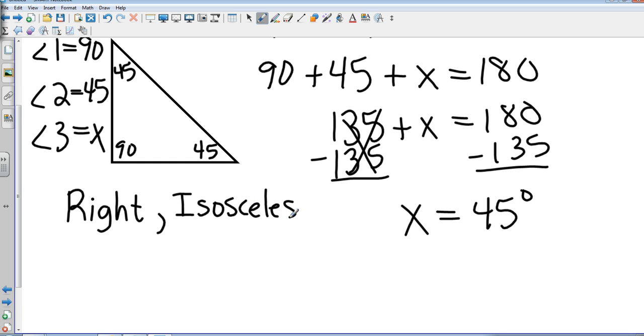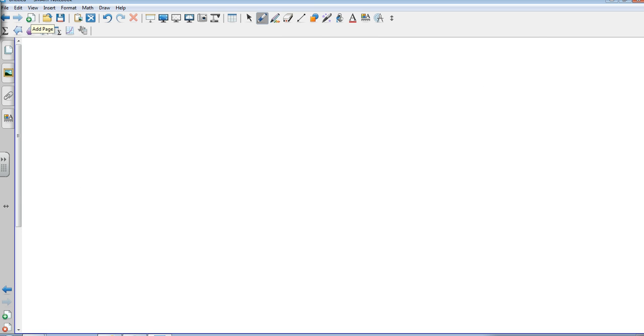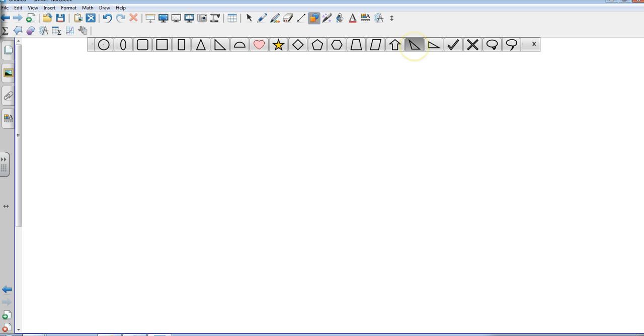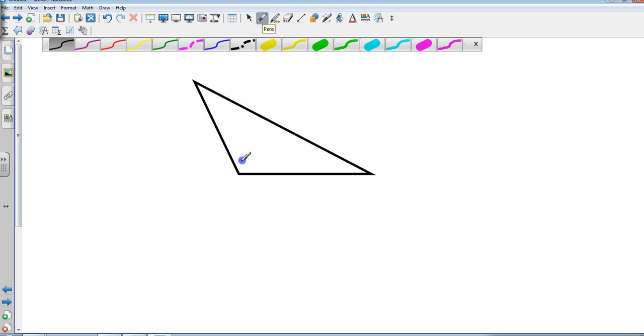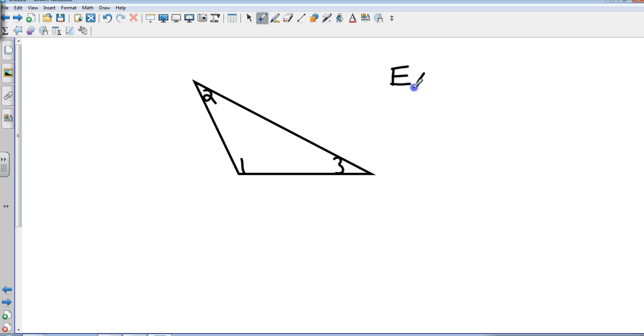That's the interior angles. We also have what's called an exterior angle. I'm going to take this triangle right here and I'm going to label these angles as 1, 2, and 3. We have what's called an exterior angle theorem.